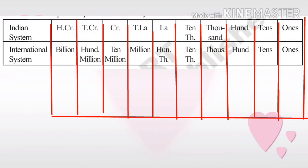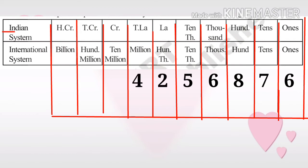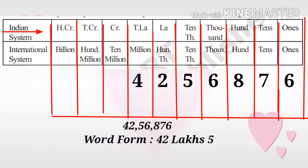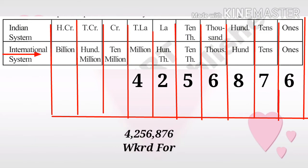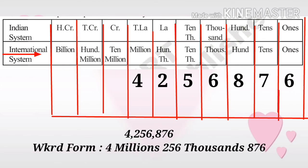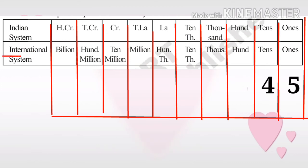Write the number from the right-hand side: 6, 7, 8, 6, 5, 2, 4. In the Indian system: 4 and 2 are in lakhs, so forty-two lakh comma; 5 and 6 are in thousands, so fifty-six thousand; and 8, 7, 6 is eight hundred seventy-six. In the international system: 4 is in millions so put comma after 4; then 2, 5, 6 are in thousands, so two hundred fifty-six thousand; and eight hundred seventy-six.